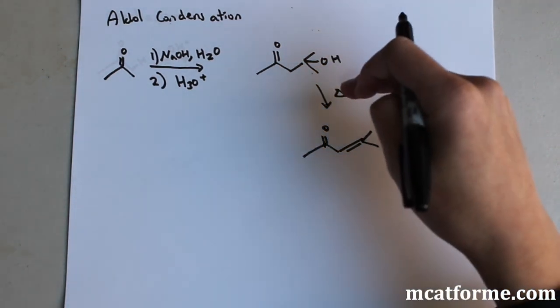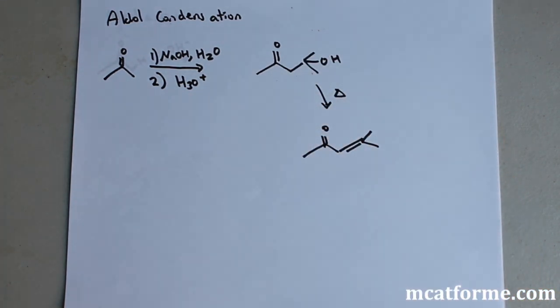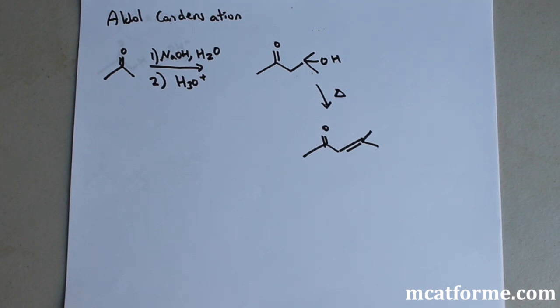So one thing to note is that if you don't have this heat, we're not going to get all the way to that alpha-beta unsaturated, we're going to stop right here. So a lot of times they will not put heat, and they'll put both of these in the answer choices, so you have to kind of know that that's the case. So now we'll look at actually how we got that.